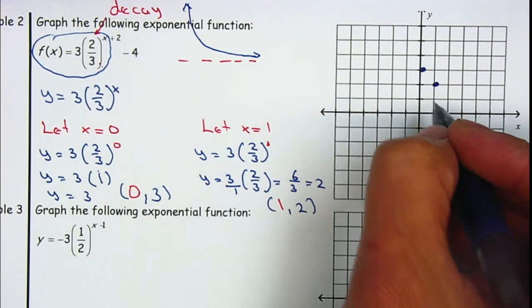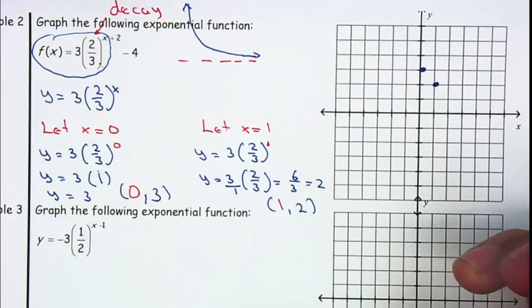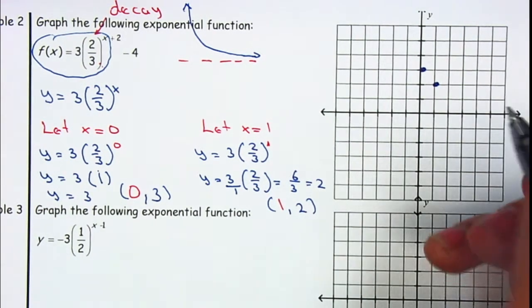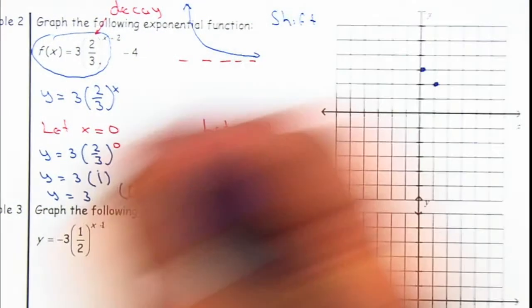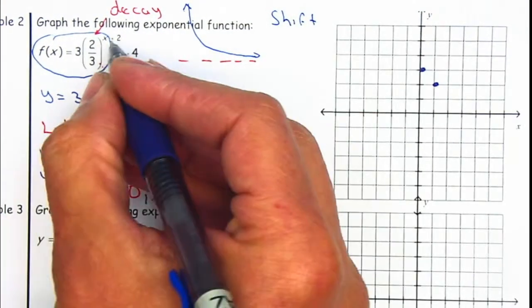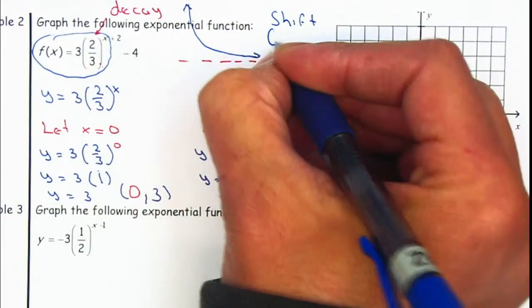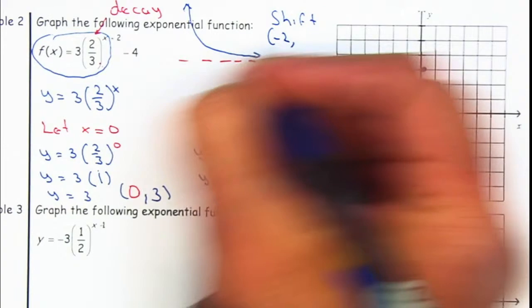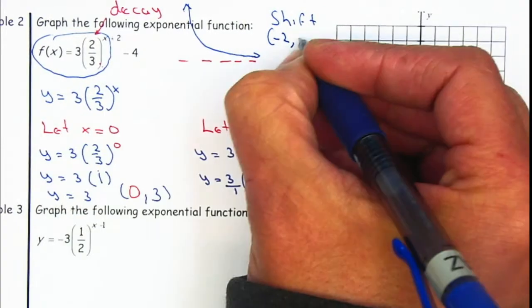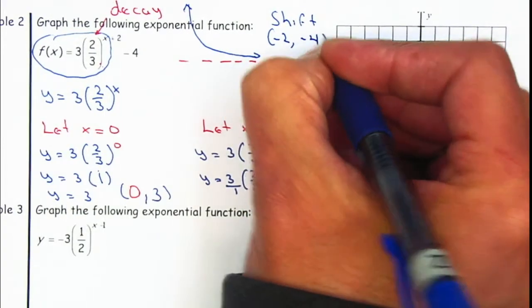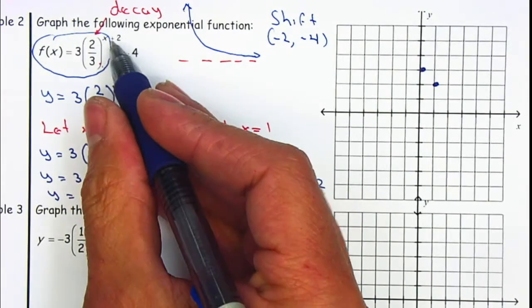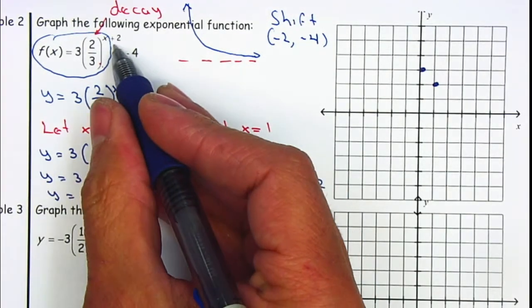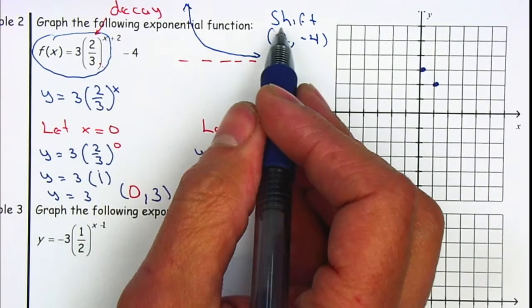Now that I have both points, I want to be able to shift it. So shift h and k — this will be negative two. And remember, the only thing that changes is your h. This is a positive, so that will be negative.